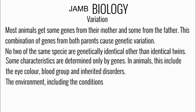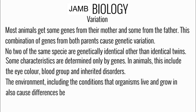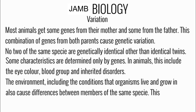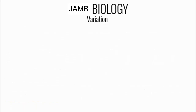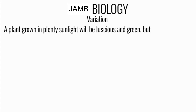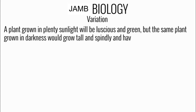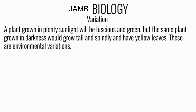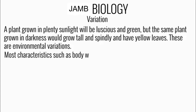The environment — including the conditions that organisms live and grow in — also causes differences between members of the same species. This is called environmental variation. For example, a plant grown in plenty of sunlight would be luscious and green, but the same plant grown in darkness would grow tall and spindly and have yellow leaves. These are examples of environmental variation.